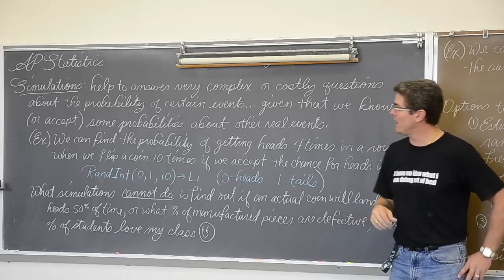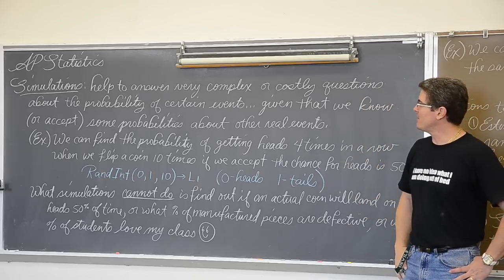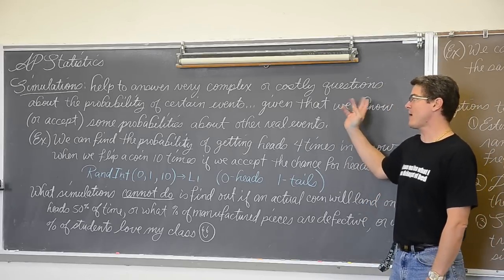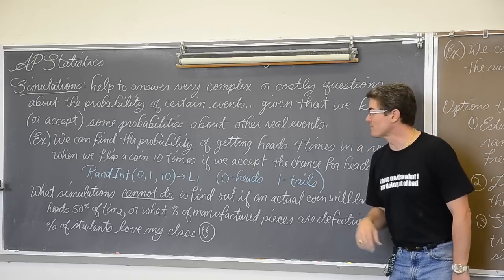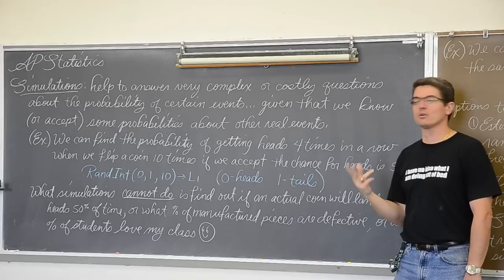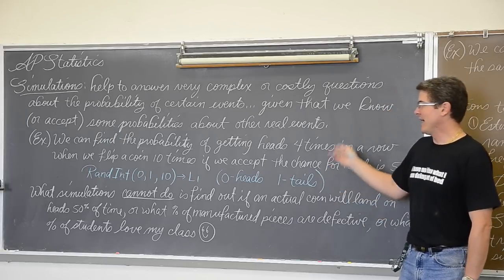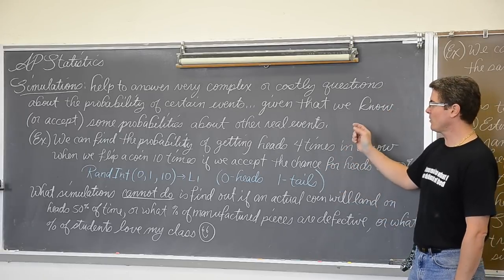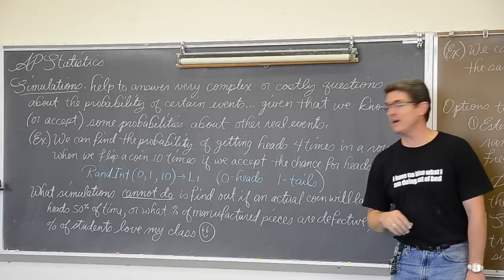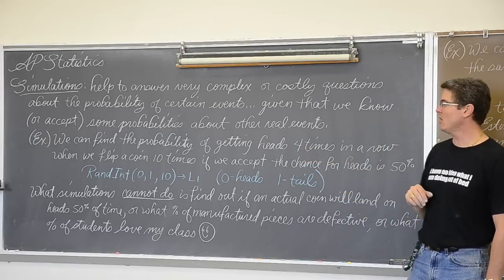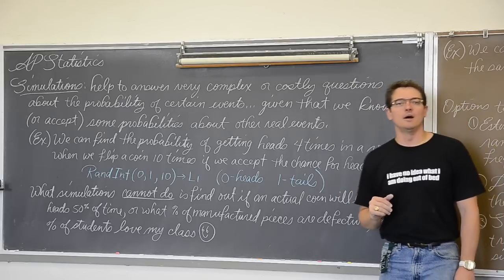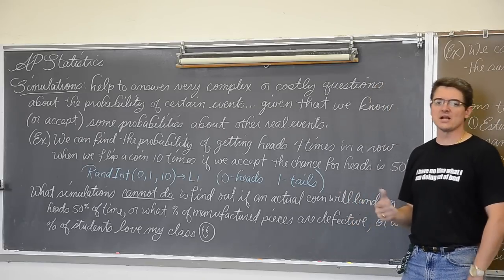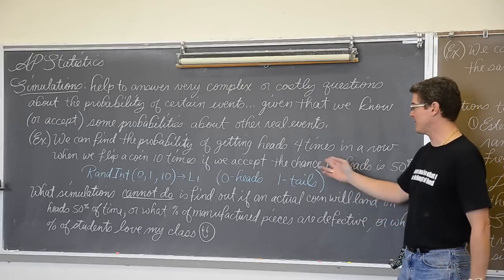Simulations help to answer very complex or costly questions about the probability of certain events given that we know, or accept, some probabilities about another real event. As an example, we can find the probability of getting heads four times in a row when we flip a coin ten times. That is not super likely, like 90% chance, but it is higher than you would think.